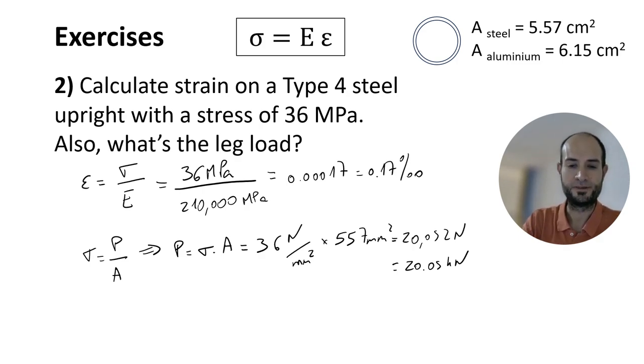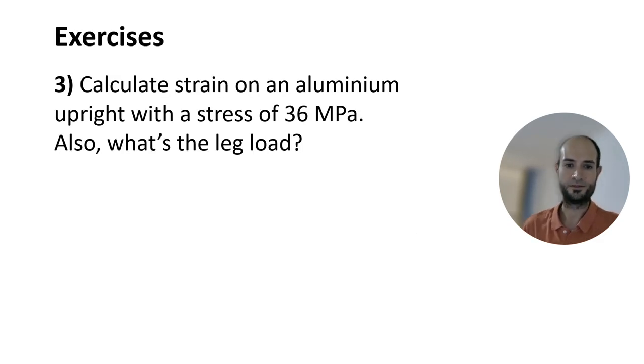Now, we are going to solve a very similar case but with aluminum. This time it's strain on an aluminum upright with the same stress of 36 megapascals and the leg load. Now, if you remember, we said that the elastic modulus indicates how easy it is to stretch a material.